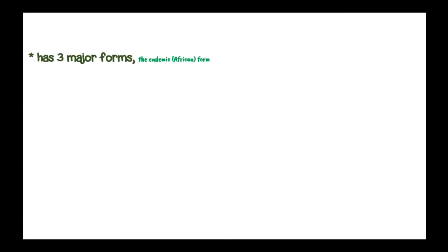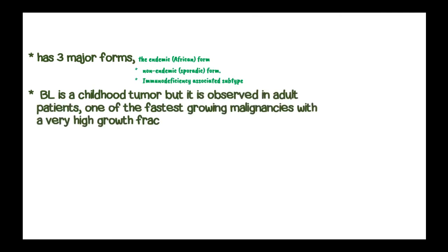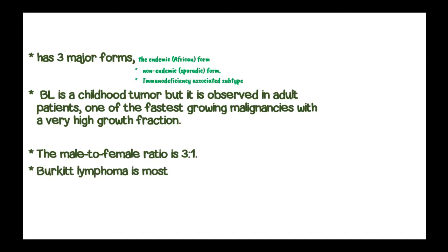Burkitt lymphoma has three major forms: the endemic or African form, the non-endemic or sporadic form, and the immunodeficiency-associated form. It is primarily a childhood tumor but is also observed in adult patients, and is one of the fastest-growing malignancies in human beings with a very high growth fraction. The male to female ratio is 3 to 1, and Burkitt lymphoma is most common in children.